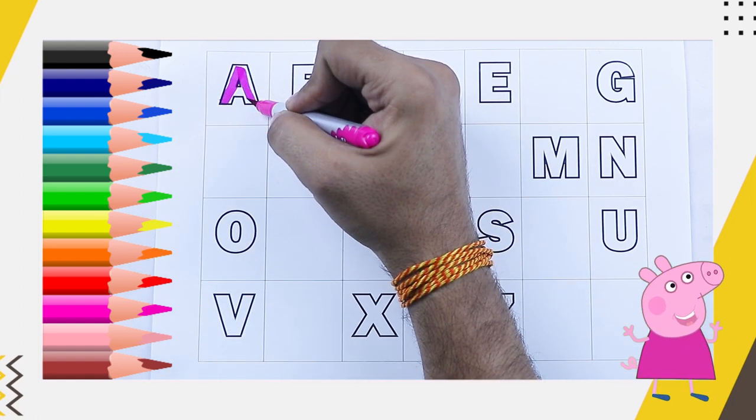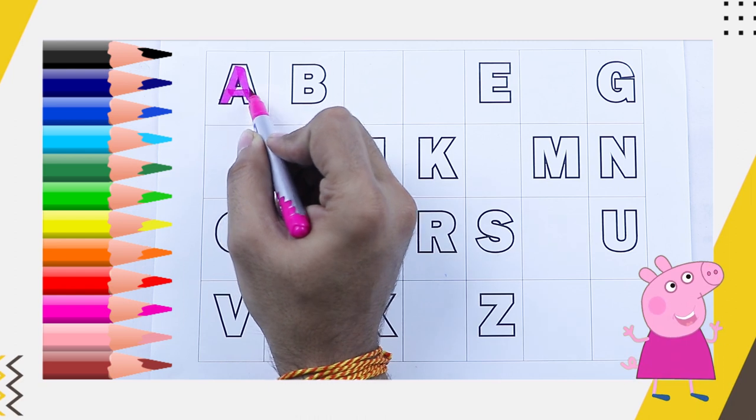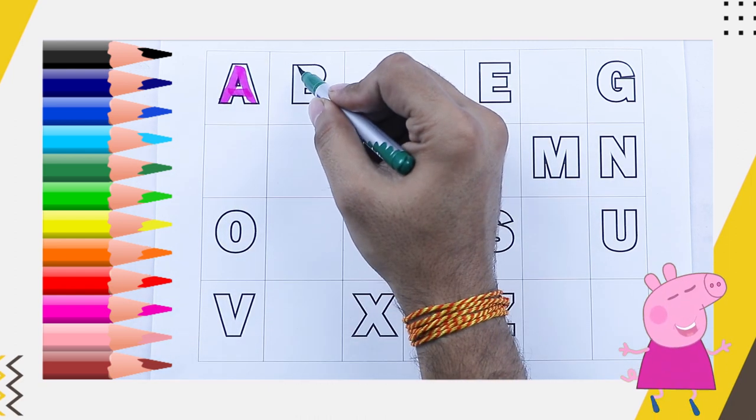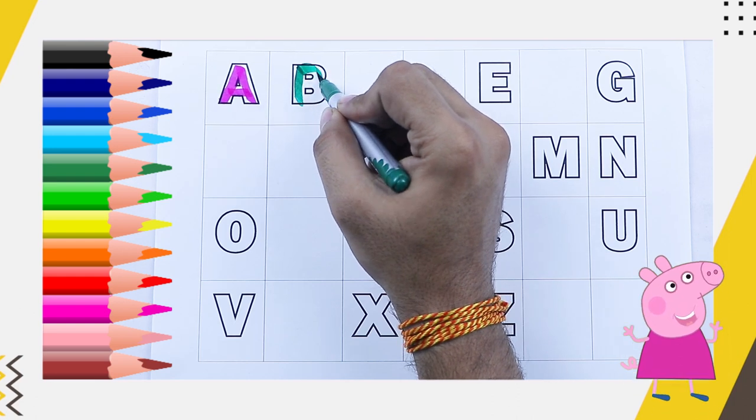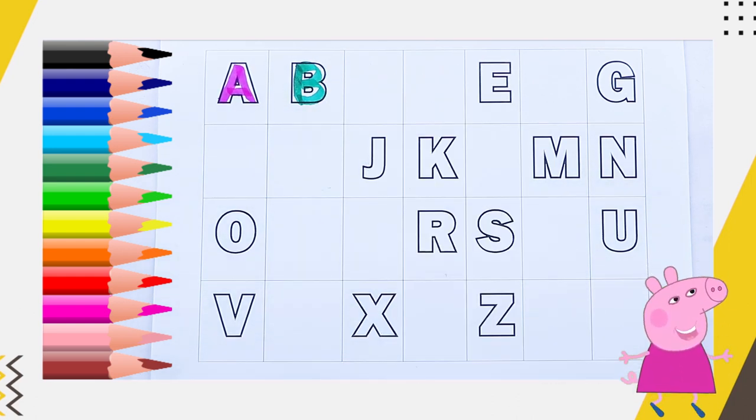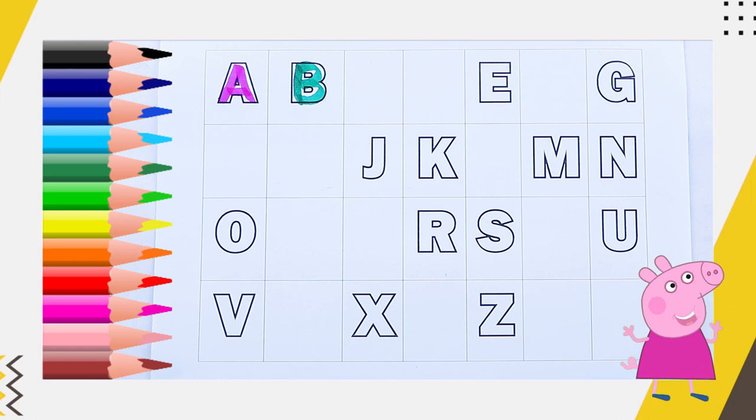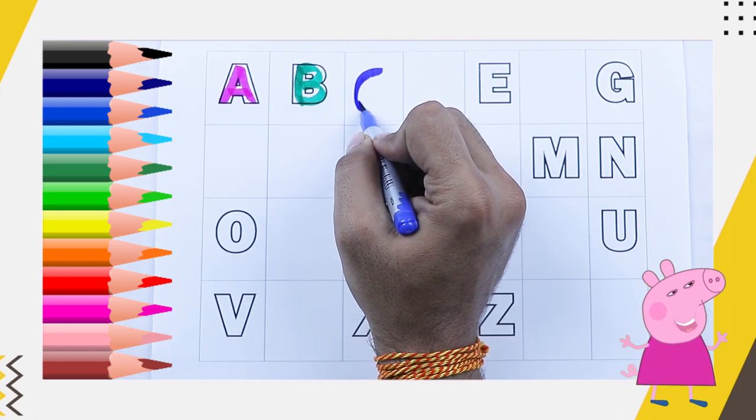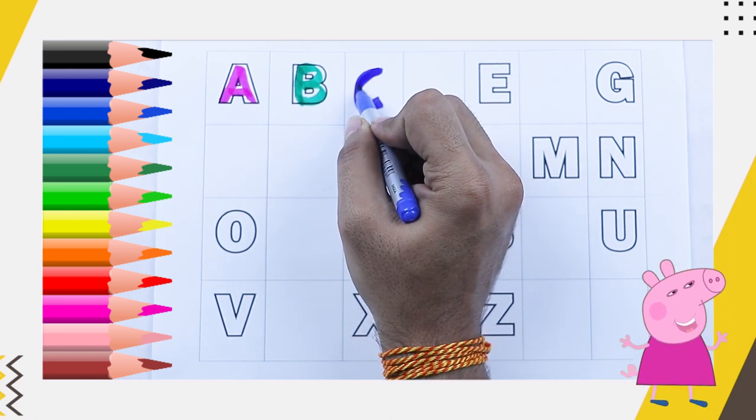Pink color, capital A, airport, apple. Green color, capital B, B for ball. Blue color, C. What next? C, C for cat.